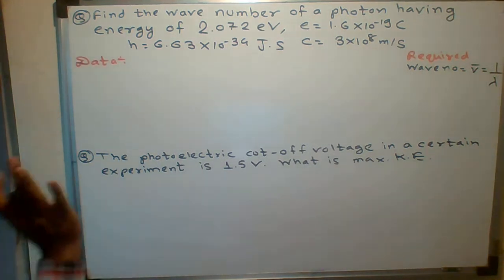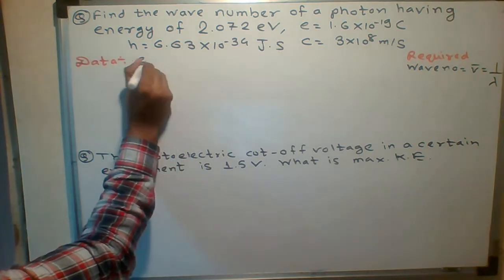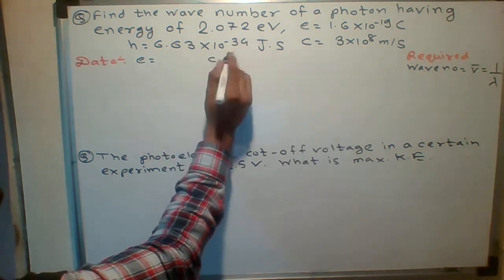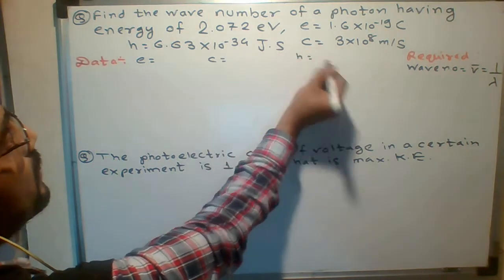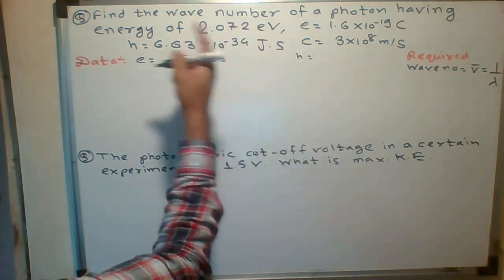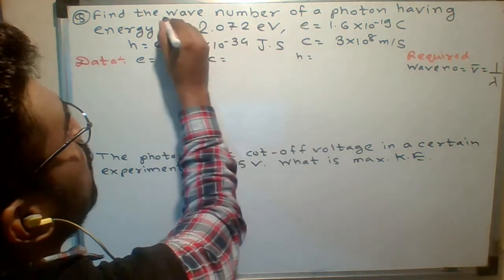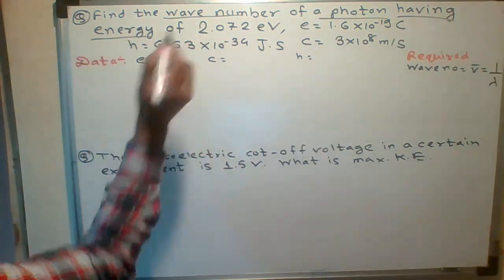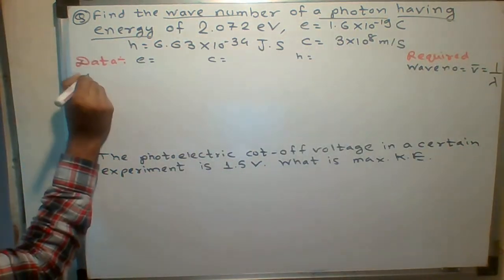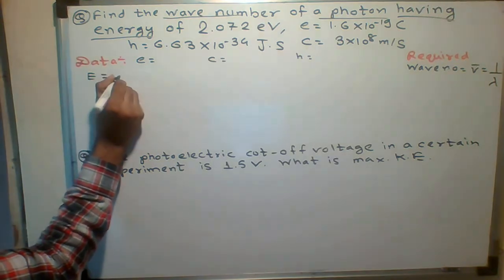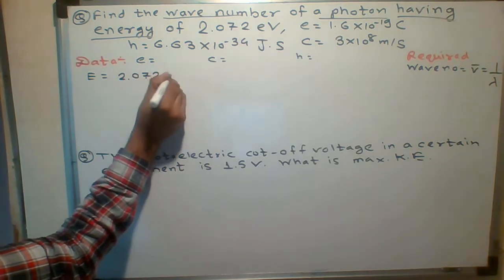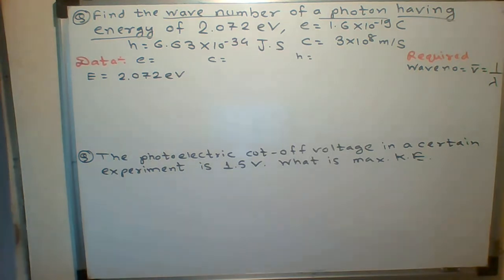What is given: E value is given, c is given, and h is given. One more thing given is the wave number of a photon having a certain energy. The energy of the photon is given as E = 2.072 electron volt.